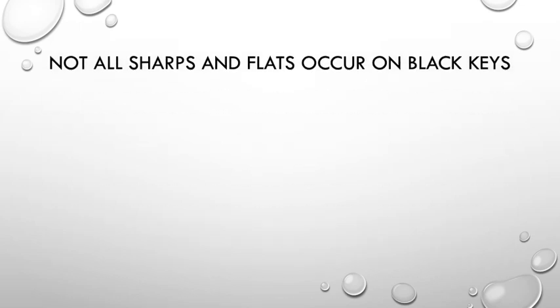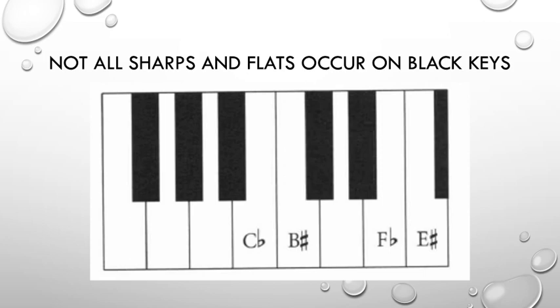Not all sharps and flats occur on black keys. For example, as we see here, E sharp, B sharp, F flat, and C flat are all played on white keys. So, if we were on B and we wanted to go up, there is no black key to go to, so it would go to that next white one. Or, if we were on F and we had a flat next to it, there's no black key. So, it would come down to F flat.